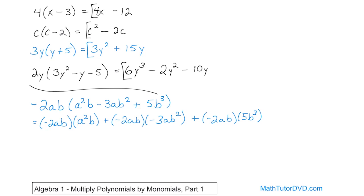Now we go term by term. Negative 2 times 1 is negative 2; a times a squared gives a cubed; b times b gives b squared — so negative 2a cubed b squared. For the second term, negative times negative gives positive; 2 times 3 is 6; a times a gives a squared; b times b squared gives b cubed — so plus 6a squared b cubed. For the third term, negative times positive is negative; 2 times 5 is 10; the a comes along; b times b cubed gives b to the fourth — so minus 10ab to the fourth. The final answer is negative 2a cubed b squared plus 6a squared b cubed minus 10ab to the fourth power.